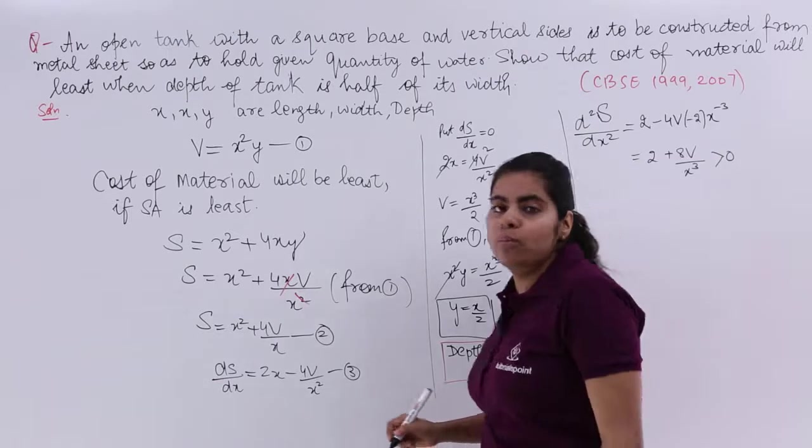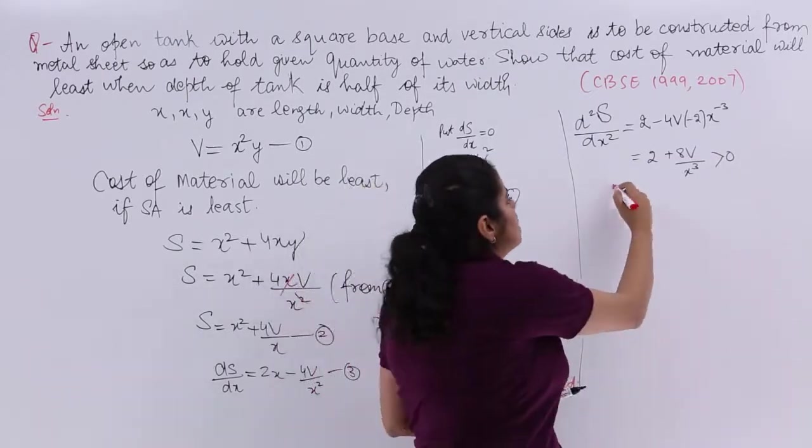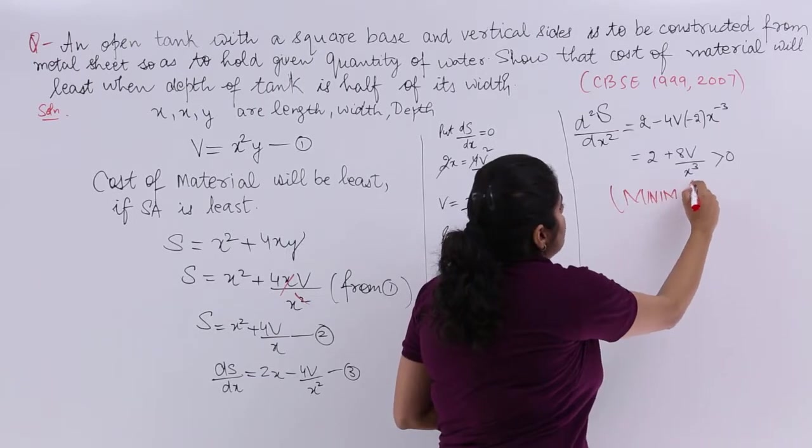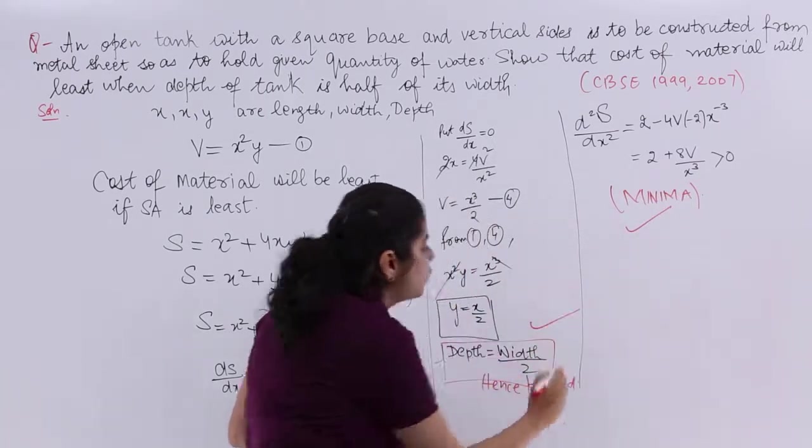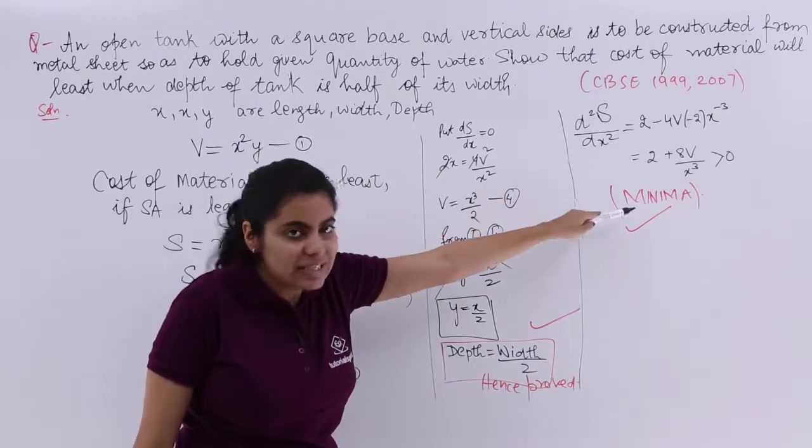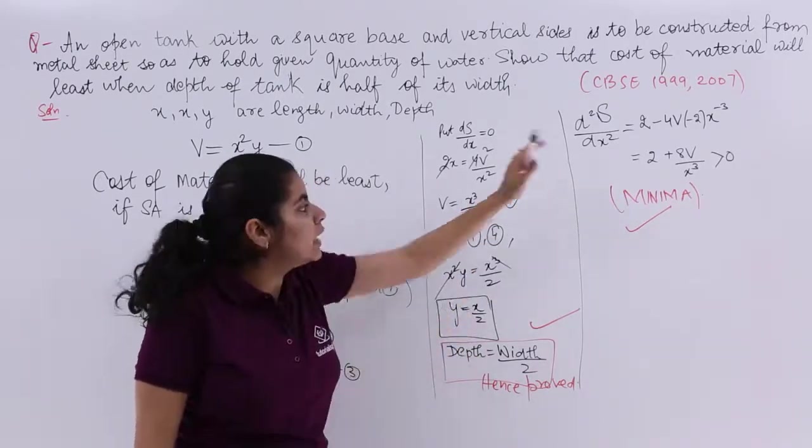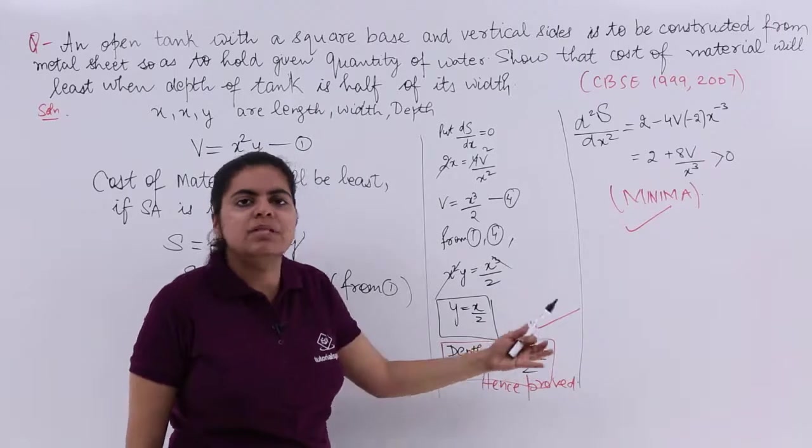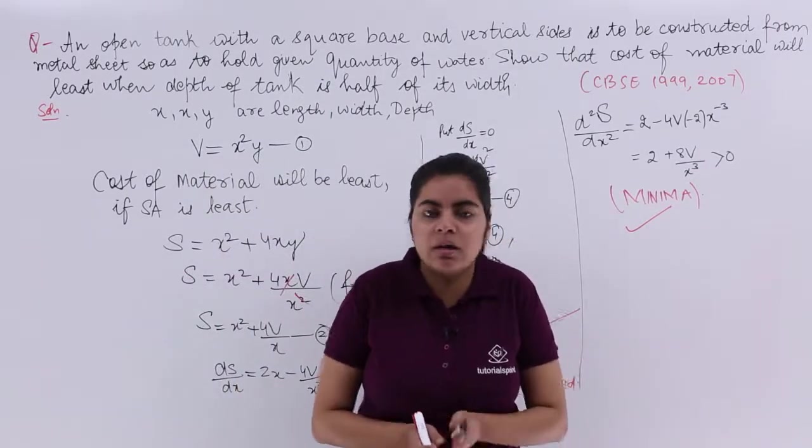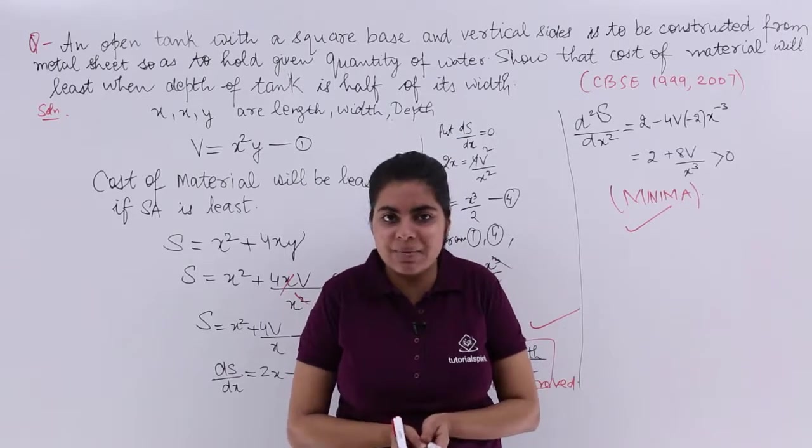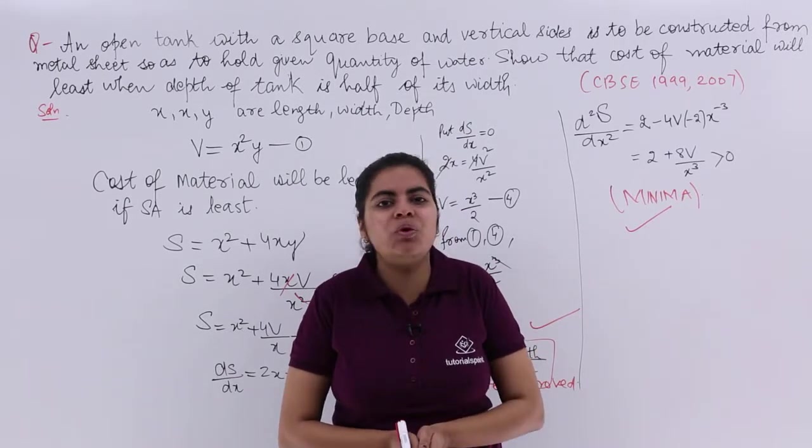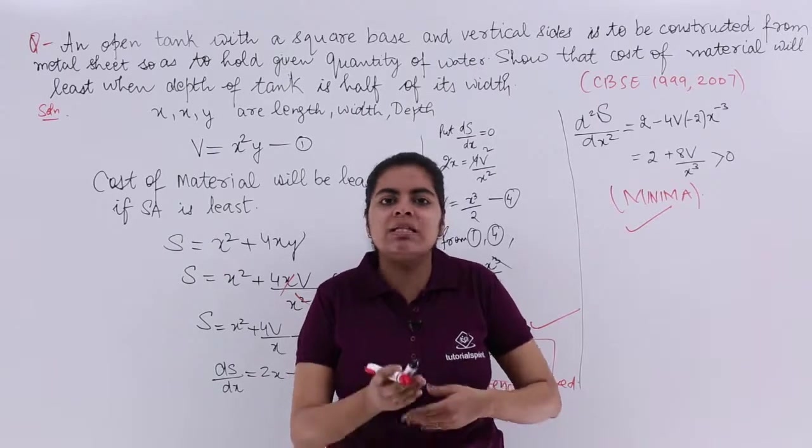Greater than 0, positive. Positive means minima. Minima means least. So both things are proved. Some people would find this derivative earlier and then prove the other thing later, that depth equals half of its width. Doesn't matter - both paths have marks. Step marking is there in mathematics. I hope you understood the problem. Let's now move on to the second numerical problem.